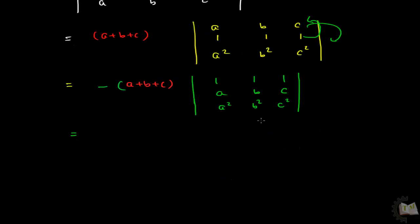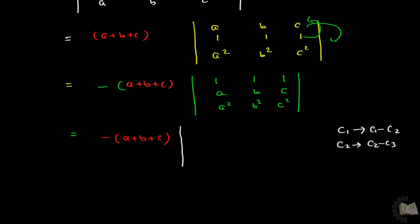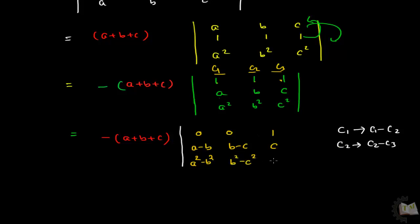Next, calculate the determinant of this matrix by applying column operations: C1 = C1 − C2 and C2 = C2 − C3. Column 1 gives 1−1 = 0, C2 gives 1−1 = 0. For the second and third rows: C1−C2 gives a−b and a²−b², while C2−C3 gives b−c and b²−c².